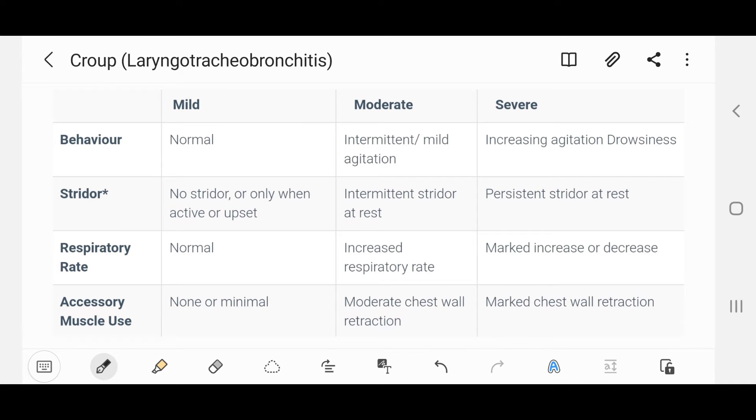As you can see in this table, it divides croup into mild, moderate, and severe according to the signs. Behavior is normal in mild and there is mild agitation in moderate, and there is increasing agitation or drowsiness in severe croup. While stridor is not present in mild and can be present if the child is active or upset, in moderate there is intermittent stridor even at rest, while in severe the stridor is persistent at rest.